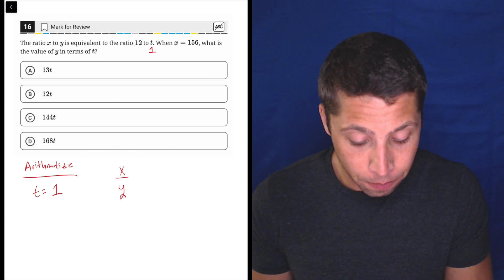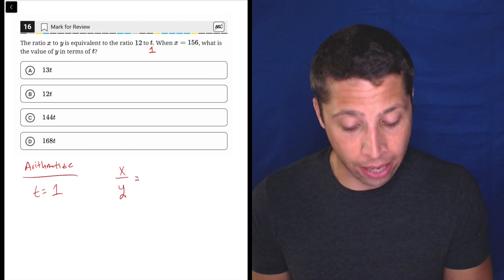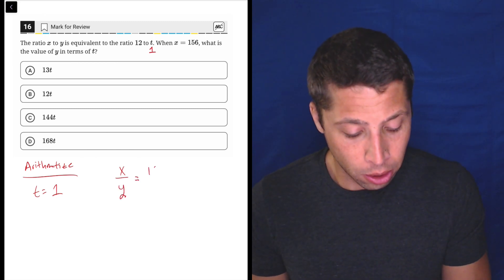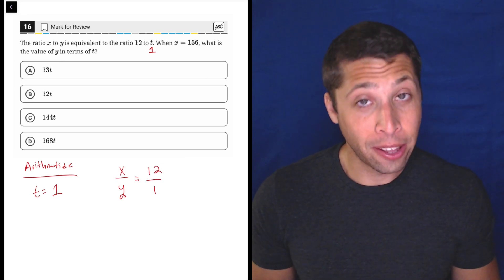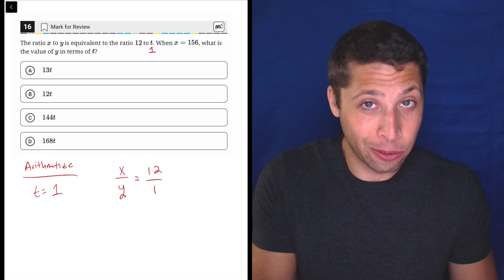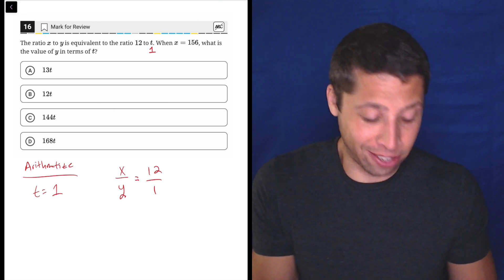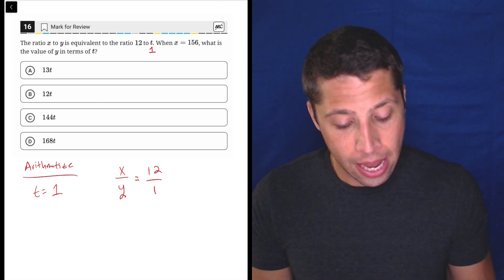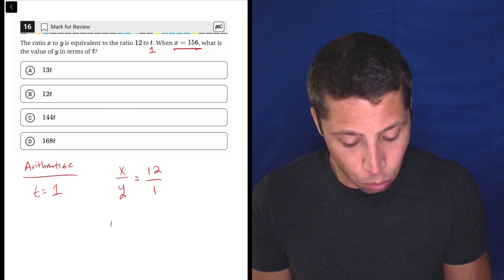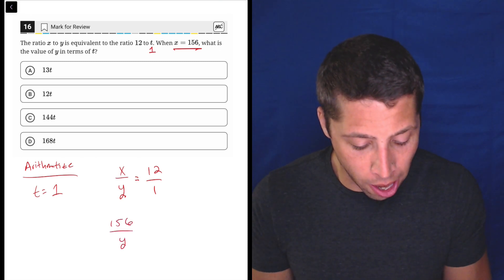X over y is equal to, x to y is equivalent to 12 to one. Now here's the benefit of picking one is that that's just 12. So we'll leave it as a fraction for now just for symmetry. And then we can substitute in, so 156 over y is equal to 12 over one.